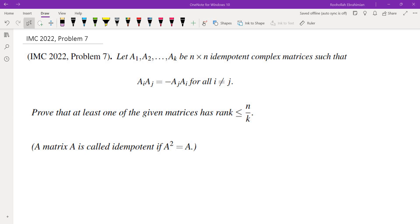Hello, in this video we're going to go over problem 7 from IMC 2022, International Math Competition for University Students. So here is the problem. Let A1 through AK be n by n idempotent complex matrices such that AIAJ is negative AJAI for all i not equal to j. Prove that at least one of the matrices has rank less than or equal to n over k. And a matrix A is called idempotent if A squared is equal to A.